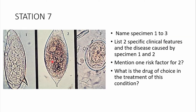Station 7: you have three specimens — specimen one, two, and three. Name each specimen, list two specific clinical features and the disease caused by specimens one and two, mention one risk factor for specimen two, and state the drug of choice for treatment.